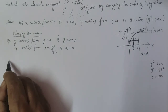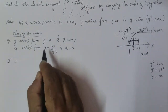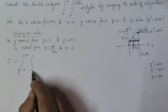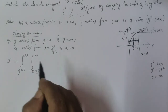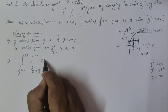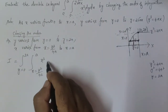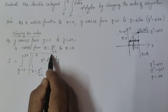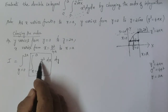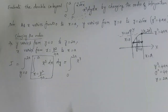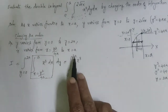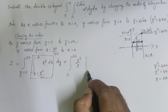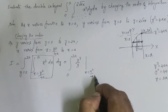Therefore, the integral I can be written as: y = 0 to 2a, x = y²/4a to a, of x² dx dy. The order has changed from dy dx to dx dy, so we first integrate with respect to x.